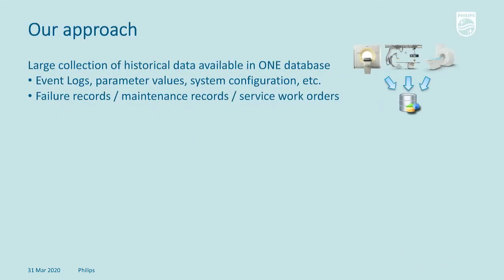Our approach was to collect into one database — Vertica — a large amount of historical data. First, historical data from the medical devices: event logs, parameter values, system configuration, sensor readings. In the same database, we also stored records of failures, maintenance records, service work orders, part replacements, and contracts. Once you have data from medical devices and failure data in the same database, it becomes possible to correlate event logs, errors, signals, and sensor readings with records of failures, part replacements, and maintenance operations.